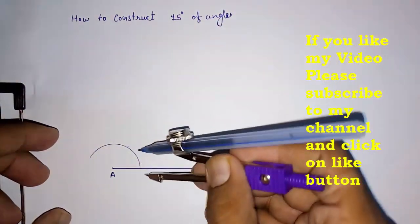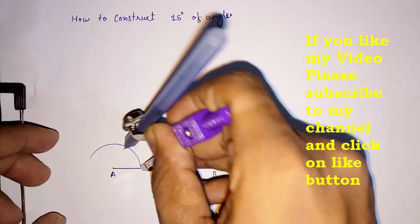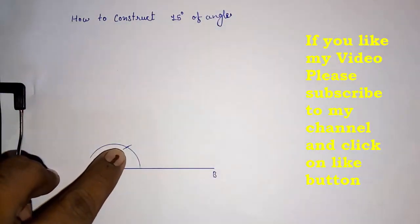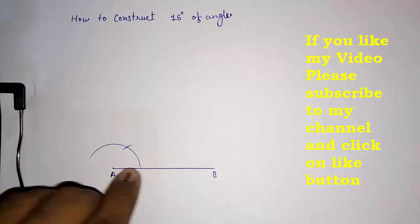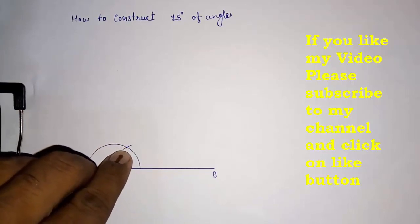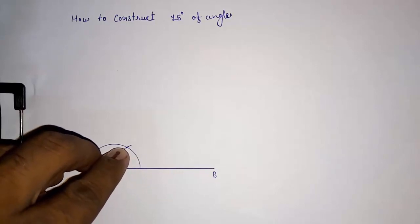I'm taking this zero degree as the center point and drawing an arc. Where it intersects, this will be your 60 degrees. This was zero and this is 60 degrees. Now we know that 10, 20, 30, 40, and 50 will come between zero and 60 degrees.